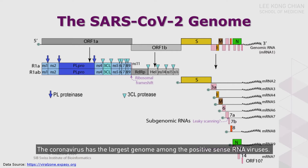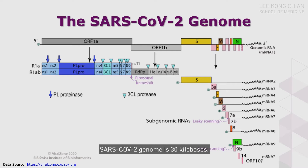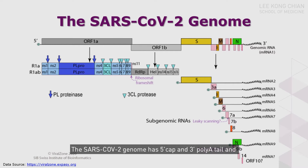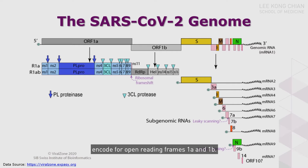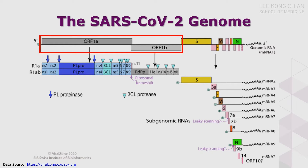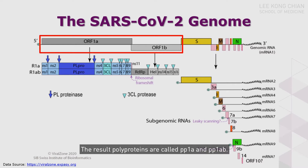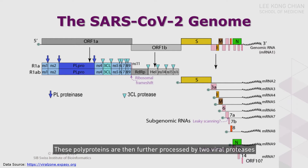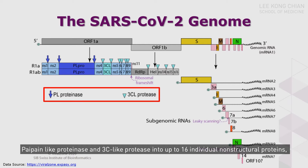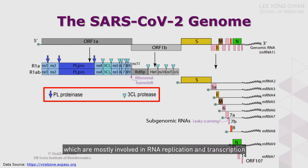The coronavirus has the largest genome among the positive-sense RNA viruses. The SARS-CoV-2 genome is 30 kilobases; in comparison, the dengue genome has only 11 kb. The SARS-CoV-2 genome has a 5' CAP and 3' Poly-A tail and serves as the mRNA for translation. The genome encodes open reading frames 1a and 1b, producing polyproteins 1a and 1ab. These polyproteins are further processed by two viral proteases — papain-like proteinase and 3C-like proteinase — into up to 16 individual non-structural proteins, which are mostly involved in RNA replication and transcription, assembled with RNA into the replicase complex.